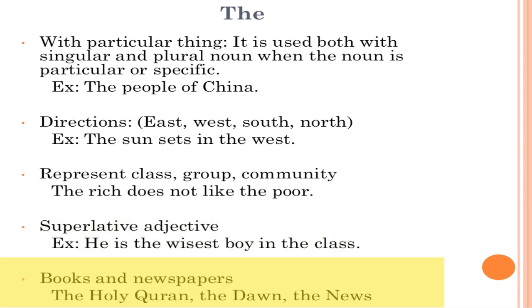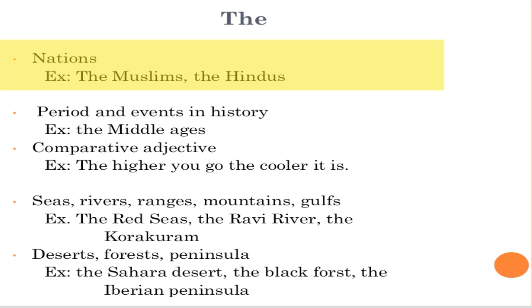Rule number five: books and newspapers. Religious books use 'the' — the Holy Quran, the Torah, the Zabur, the Injil. Newspapers also use 'the' — the Dawn, the Nation, the Daily Times. Rule number six: nations and communities — the Muslims, the Hindus, the Sikhs — always use 'the'.